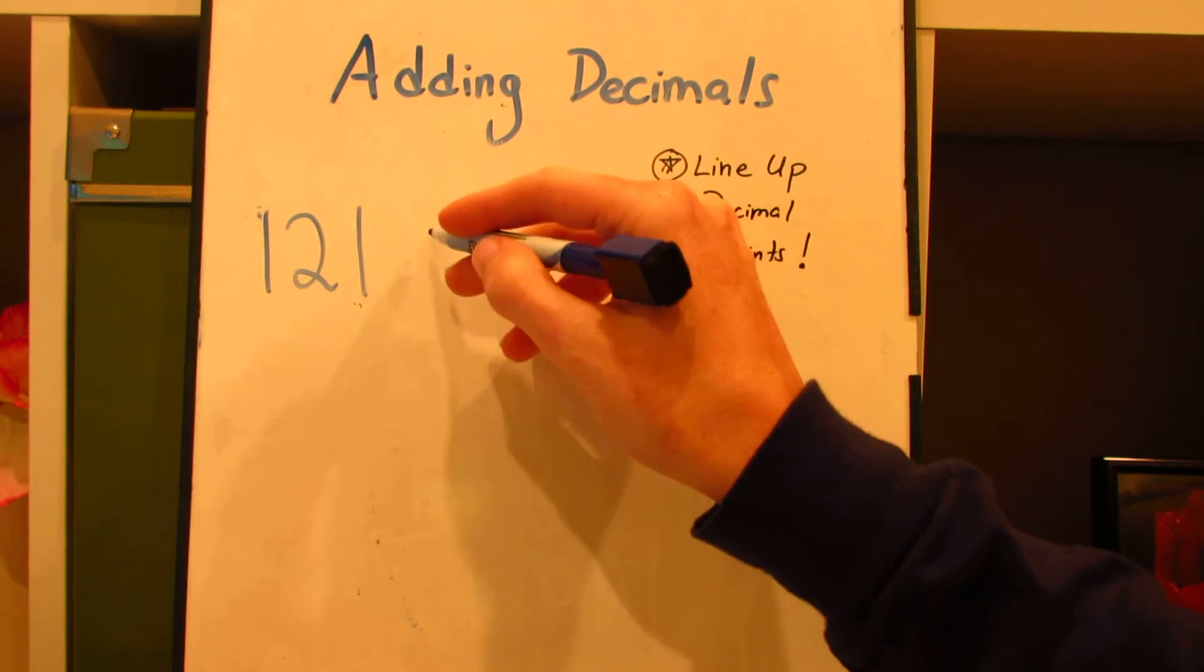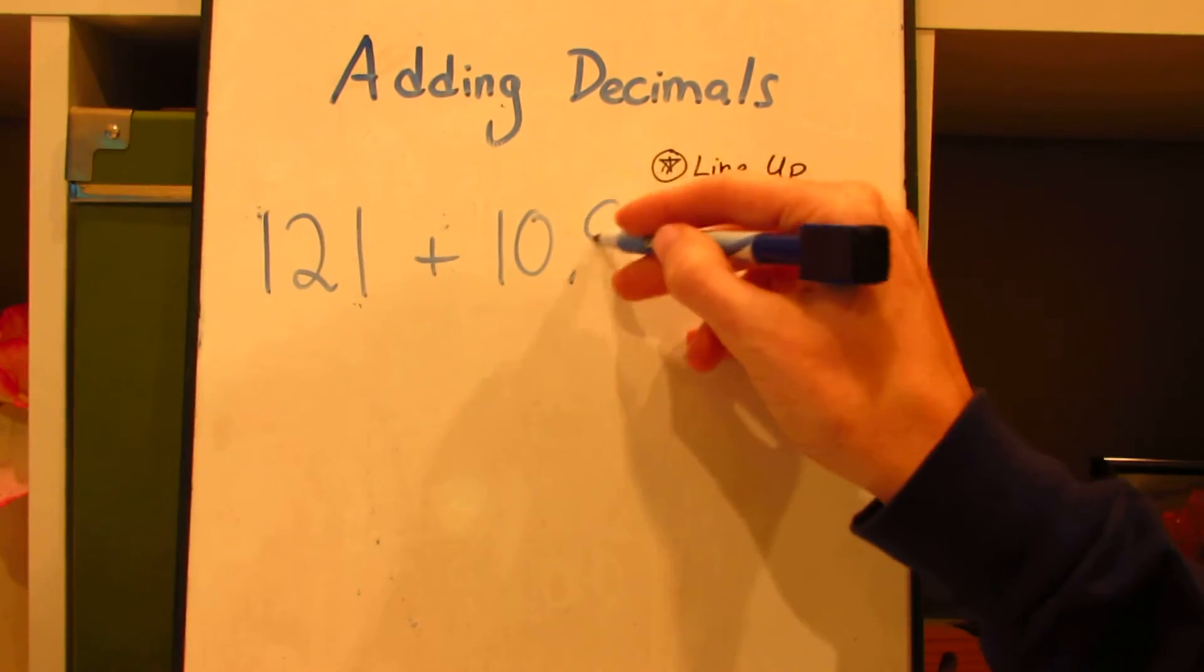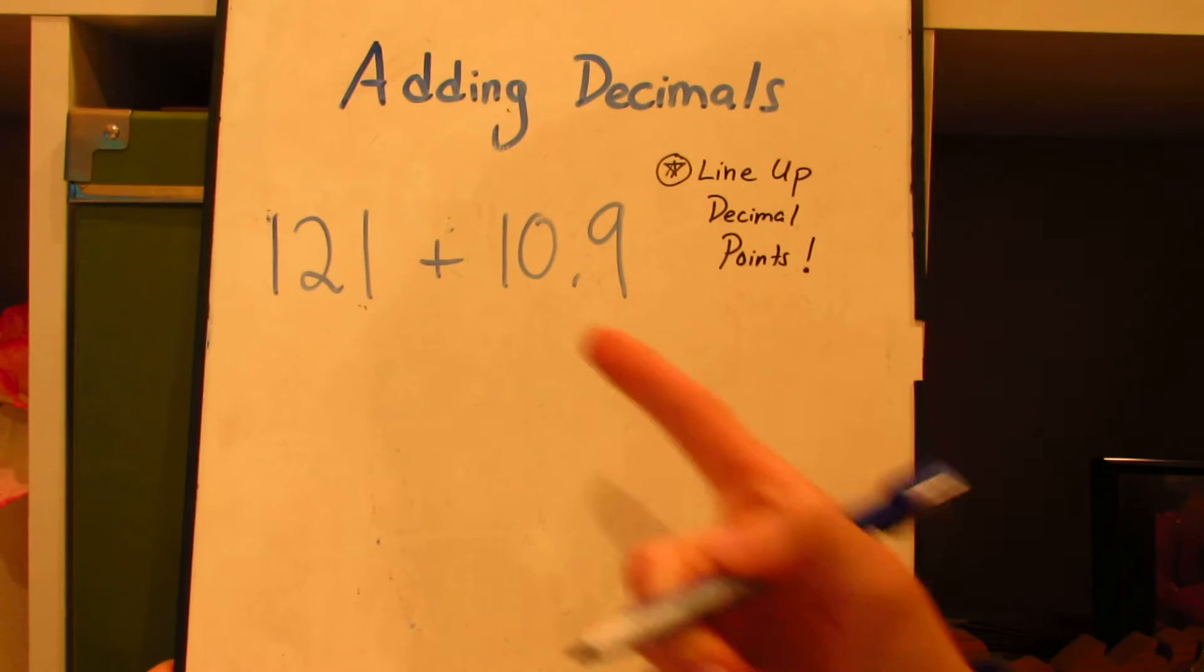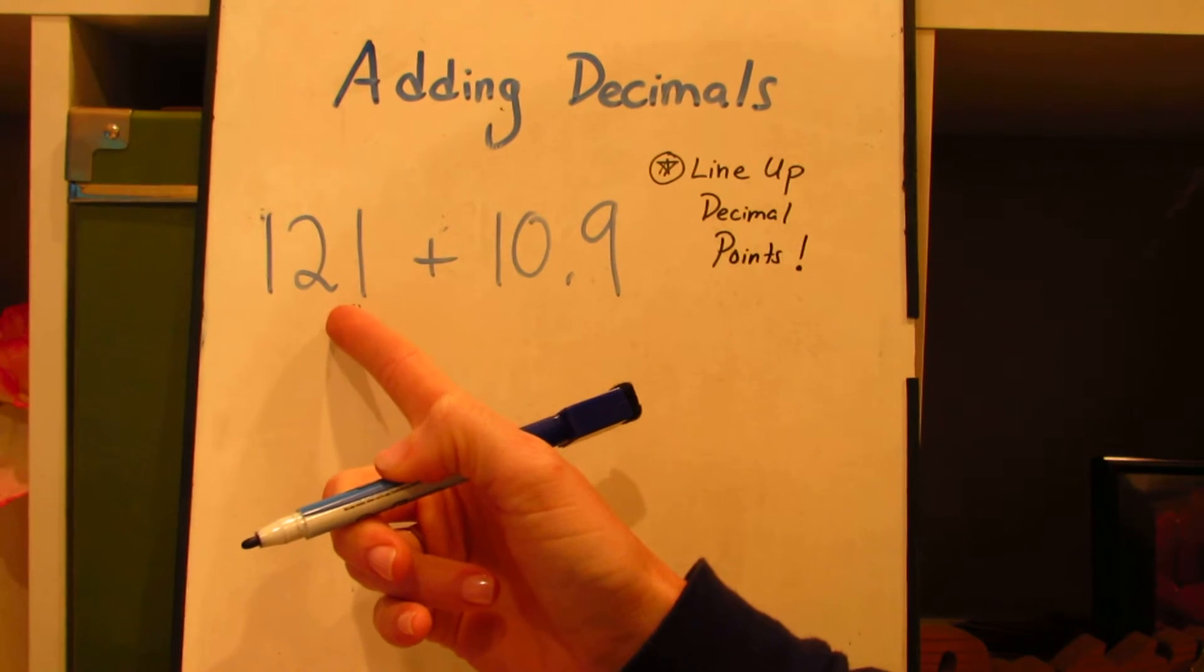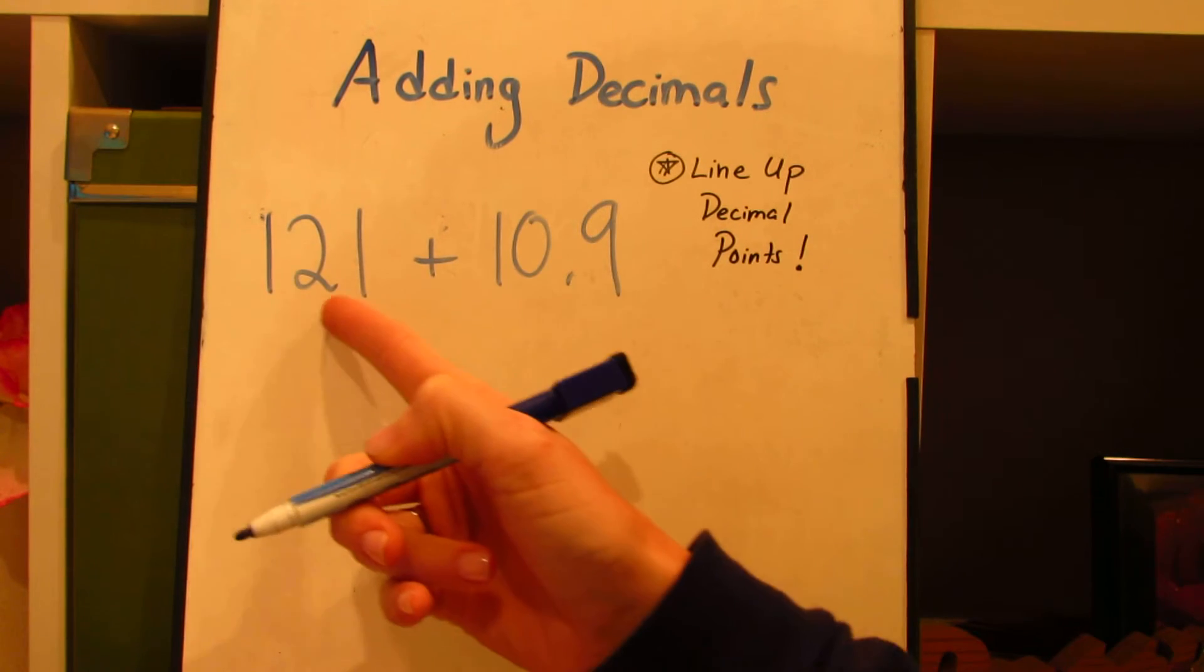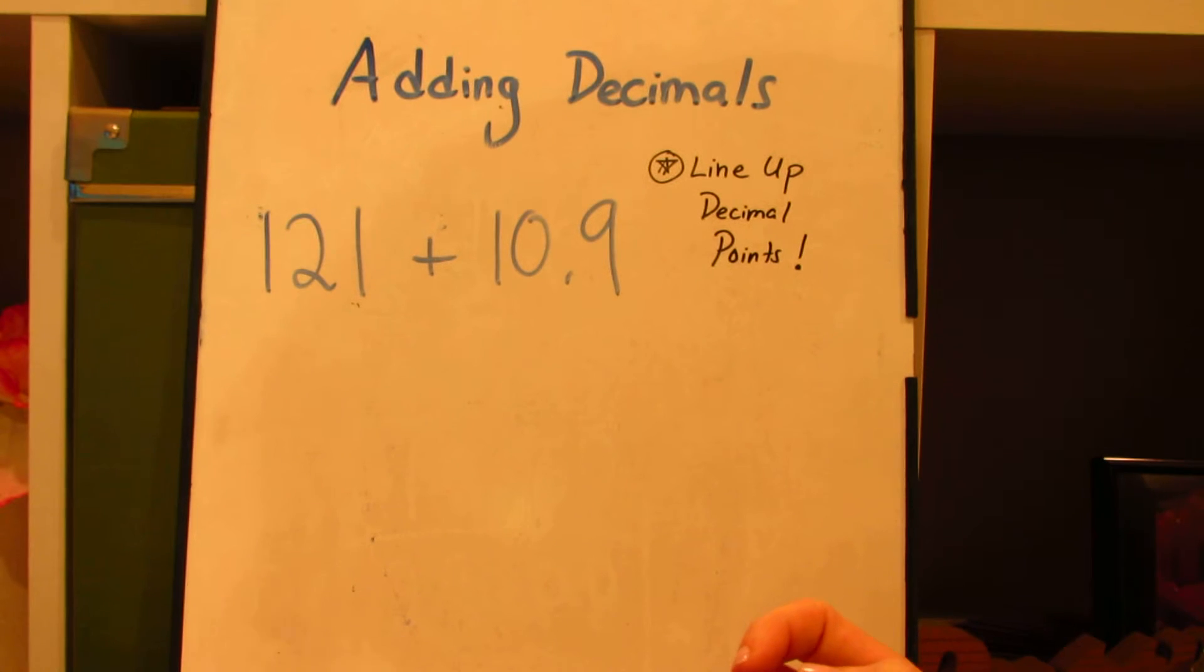Number 121 plus 10 and 9 tenths. Now, I would love to line up the decimal points except I don't see a decimal point in 121. That might be challenging for some people.